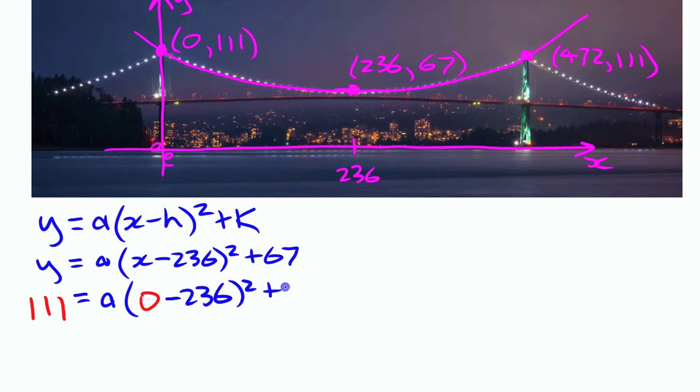And then we can start solving for this a value here. So to isolate that, I am going to just write this as (0 - 236)². I am going to move the 67 over to the other side, so I'm going to have, if I subtract 67 from both sides, I have 44 there. And I'm going to write this thing up here so I have enough room.